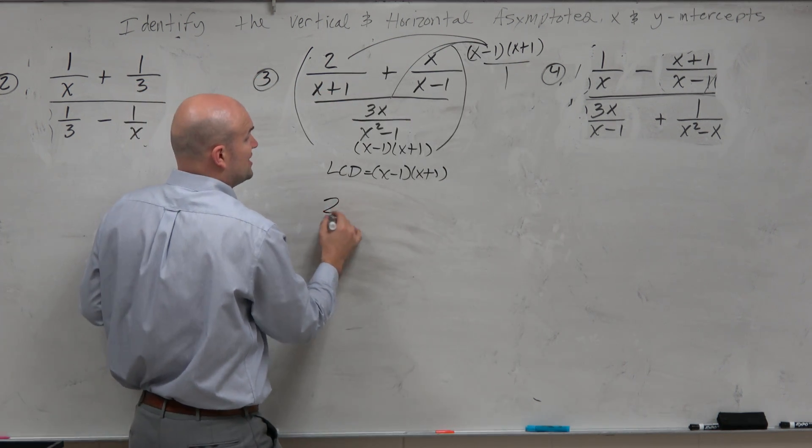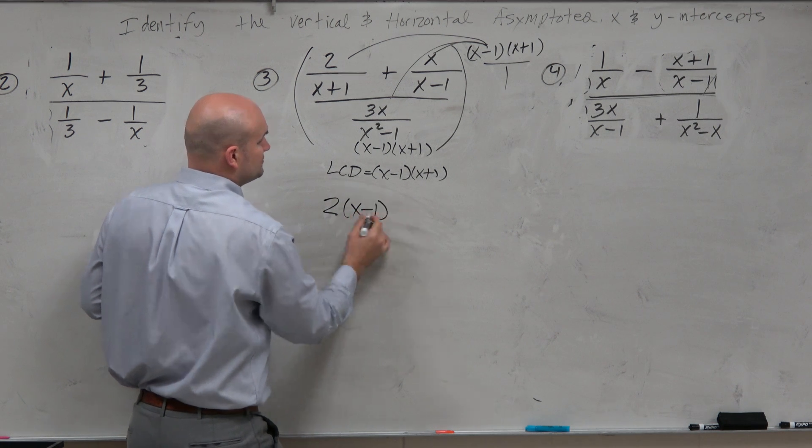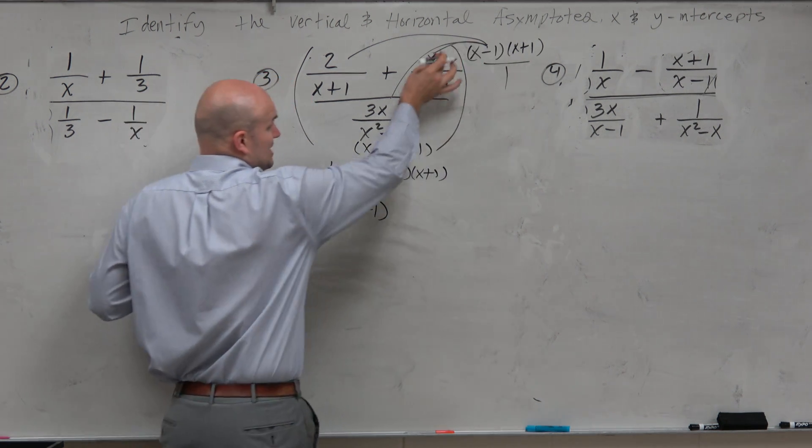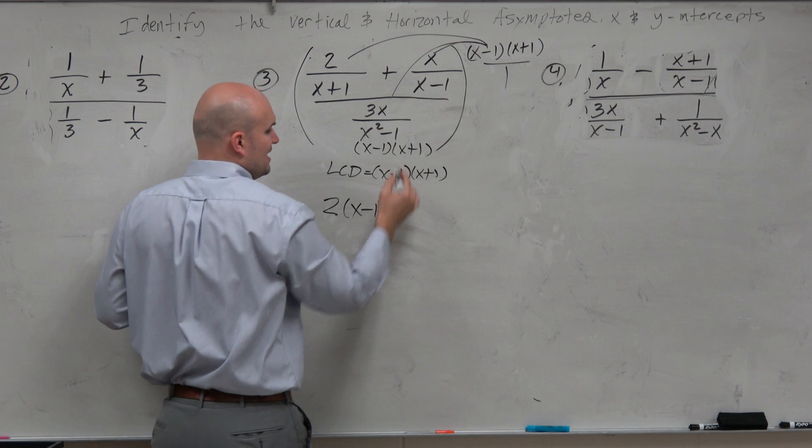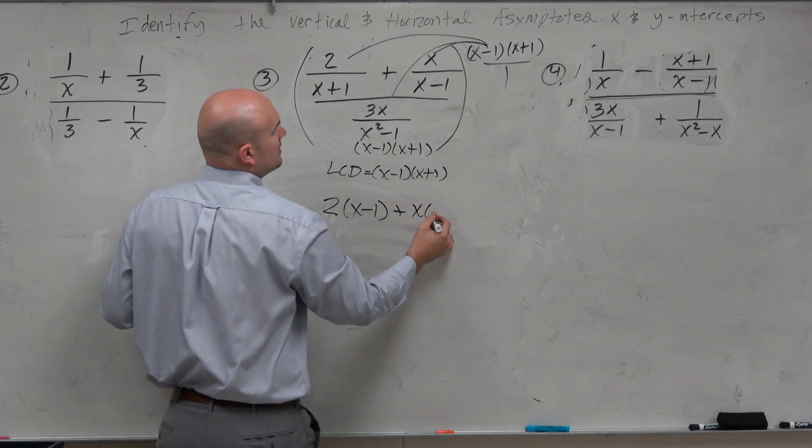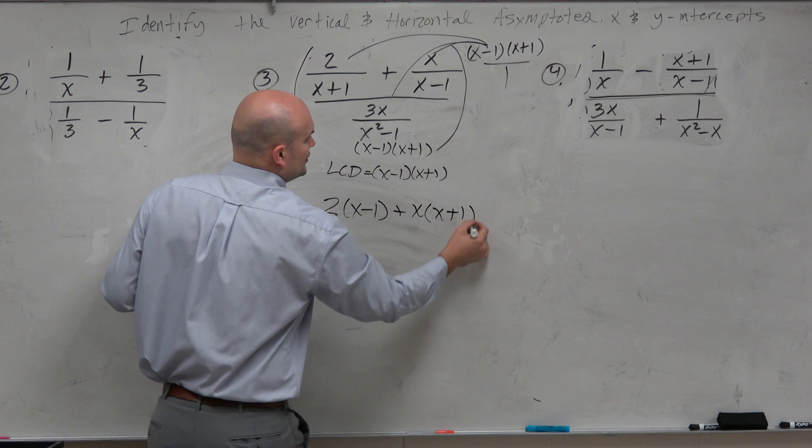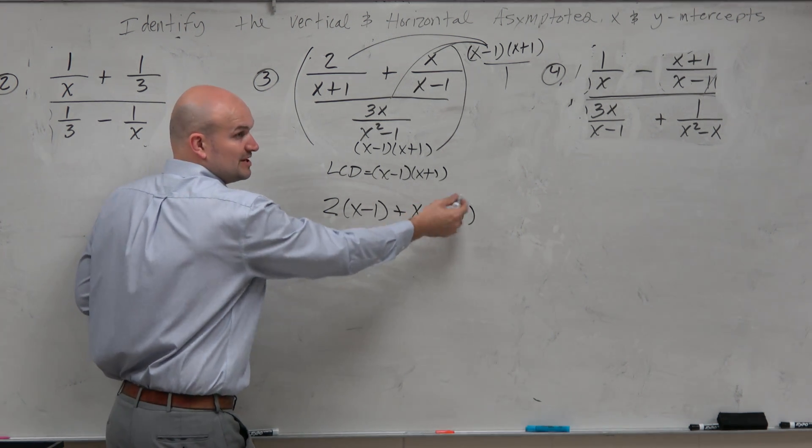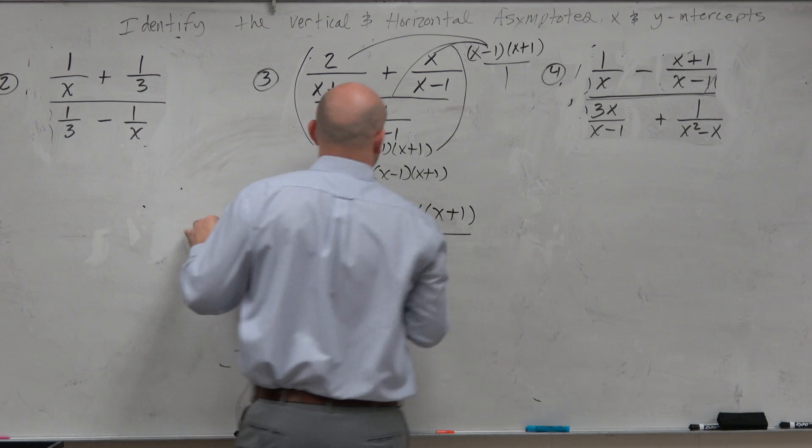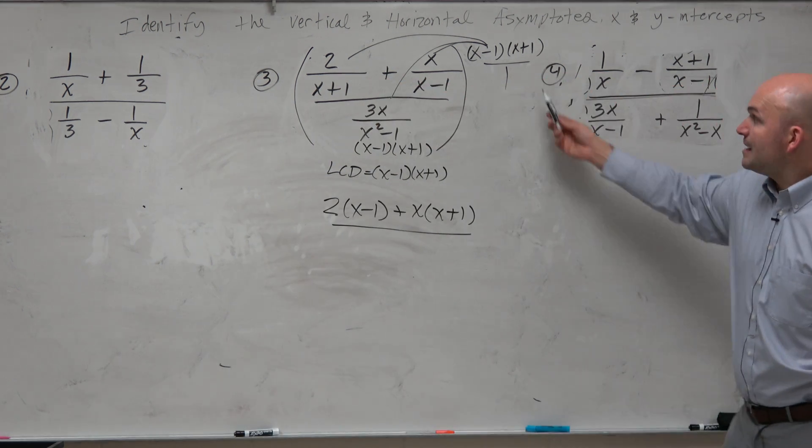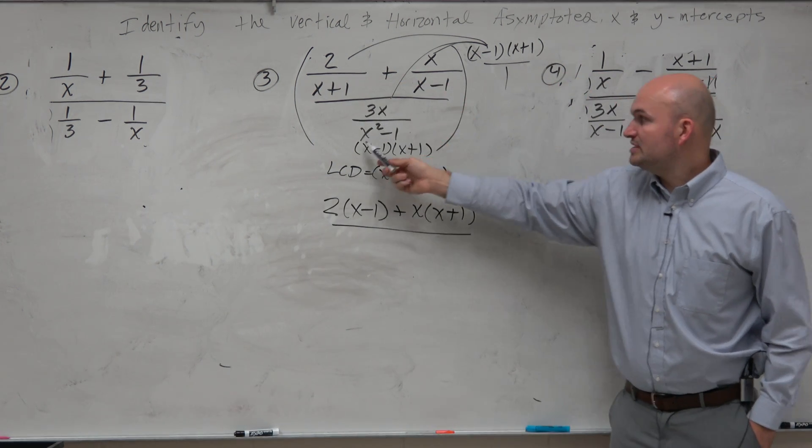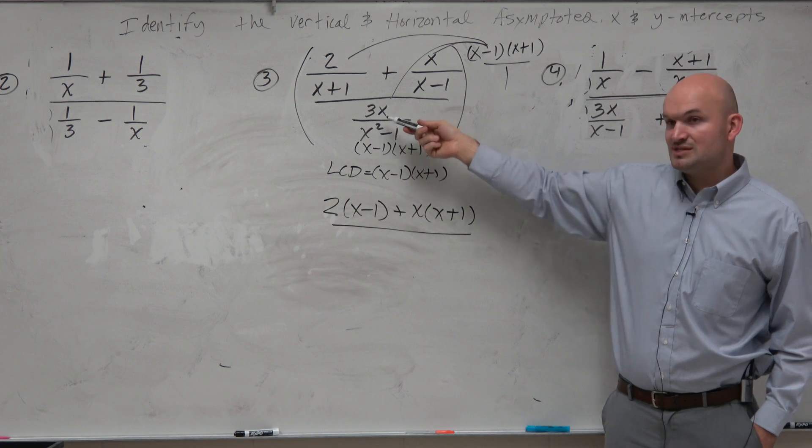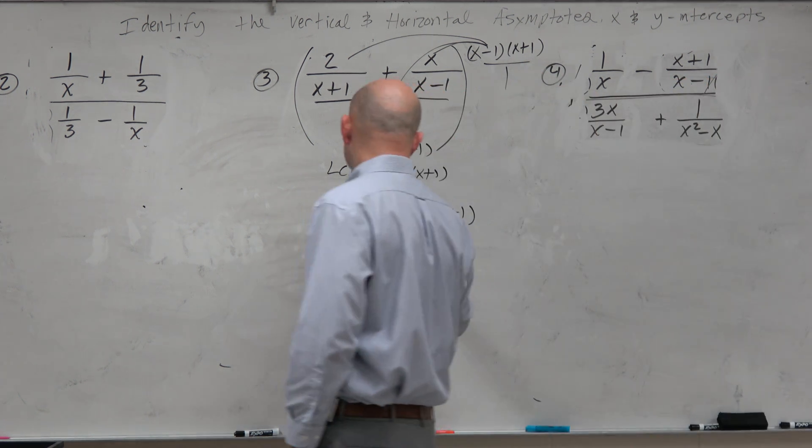So I'll be just left with 2 times x minus 1. If I multiply this times that, you can see the x minus 1's divide out. So I'm left with x times x plus 1. Notice how I'm still using my parentheses, because I want to make sure I can apply distributed property. In the denominator, when I multiply this times that, you can see that both of these divide out, and I'm just left with a 3x.